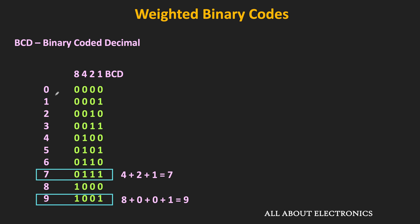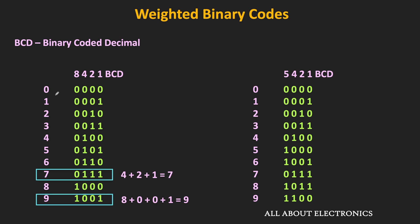This is how digits 0 to 9 are represented in the 8421 code. Similarly, 5421 is another weighted code where 5, 4, 2, and 1 represent the weight of each position. For example, if we take the code 1001, there is a 1 in the position of 5 and 1. Adding the weights gives 6, meaning this is how decimal number 6 is represented in the 5421 code. This is how all digits from 0 to 9 are represented in the 5421 code.